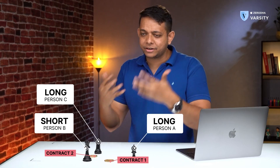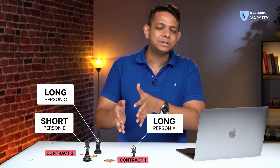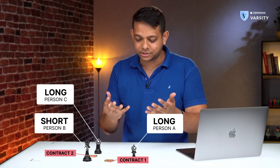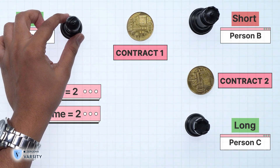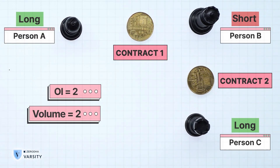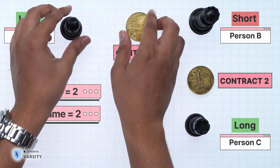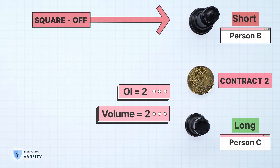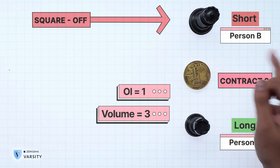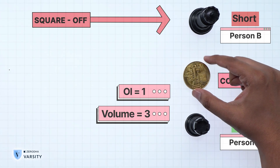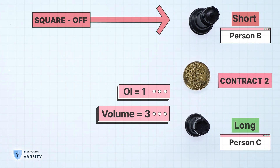You might notice that at every transaction the OI and volume are exactly the same — so what's the difference? Let me close one position to illustrate. If person A decides to close his long position with person B and exits, another transaction has taken place. Volume is now three, but the OI is now only one because that contract no longer exists — it was exited. So OI is one.